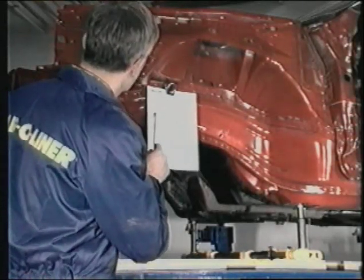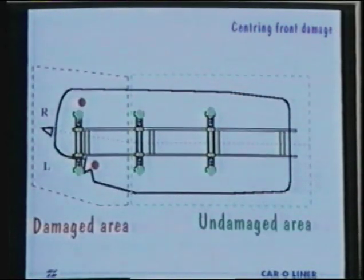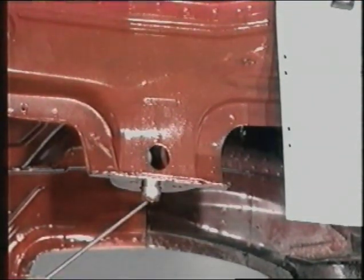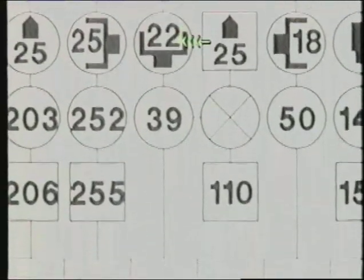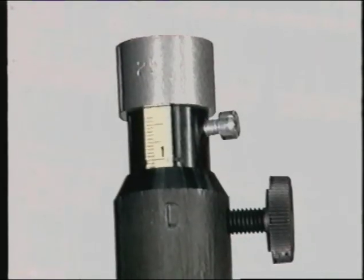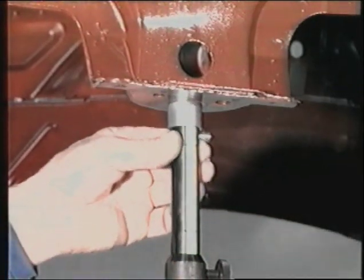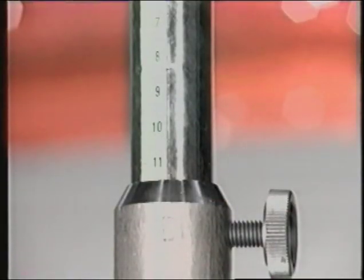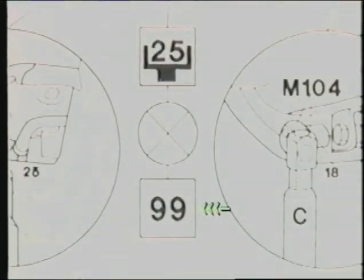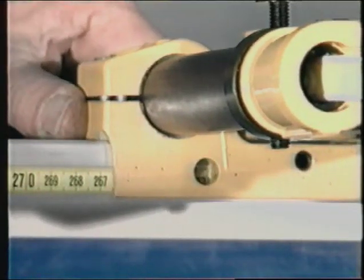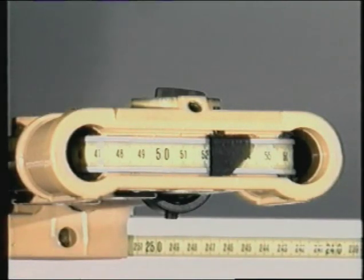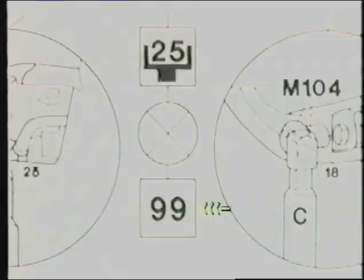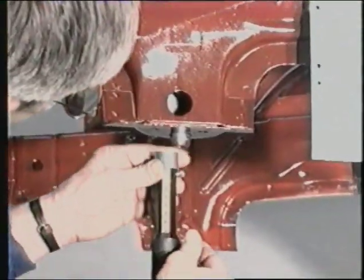Let's now go to the damaged part of the vehicle and look at the two methods which can be applied for checking measurements in the damaged area. Method number one: place the measuring slide with the specified measuring parts on the measuring bridge under the selected measuring point. Raise the measuring scale with the adapter against the measuring point and lock with the knob. Measure the length, width, and height measurement with the measurements in the datasheet and evaluate the damage. Method number two: place the measuring slide with the specified measuring parts on the measuring bridge and set the values to those given in the datasheet. It's now easy to evaluate the damage by comparing the position of the adapter and the position of the measuring point.